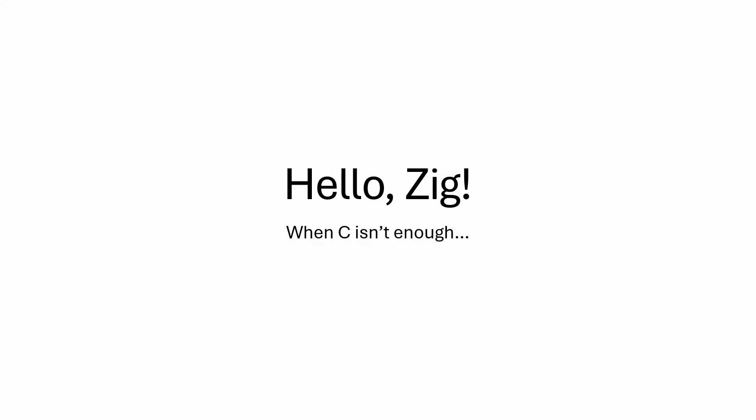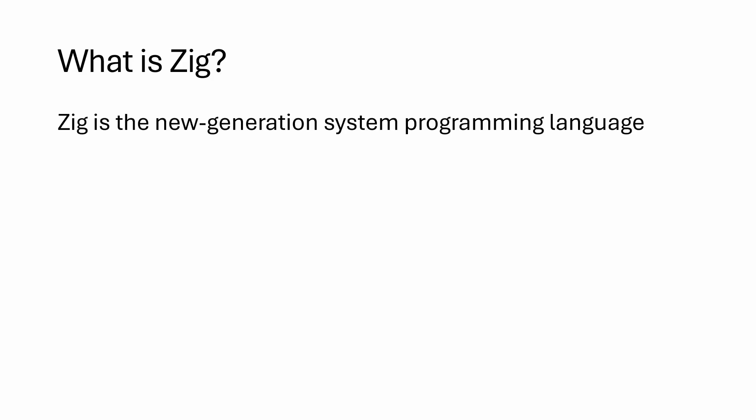Hello everyone! In this lecture let's talk about Zig, or the cases when C isn't enough. For those of you who don't know, let's talk about what Zig is first. Zig is the new generation systems programming language, and I like to describe it as a modern C.